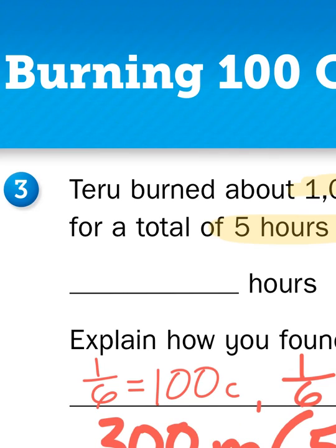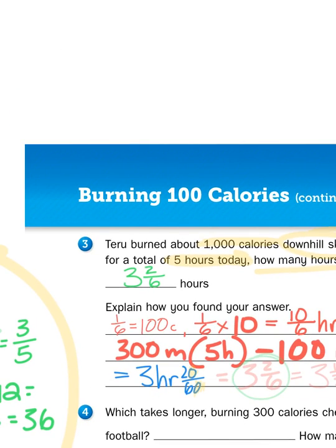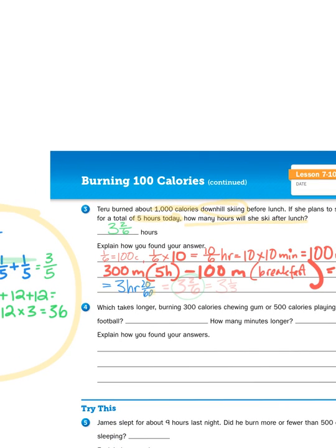So the total amount of hours that Tarou will need to ski after lunch is going to be three hours and two sixths. And that's how we solve that problem. Lots of little steps but if you know your multiplication tables, if you know that there are 60 minutes in an hour you'll get through it. Ask your math teacher if you have questions otherwise we'll talk again soon. Thanks.